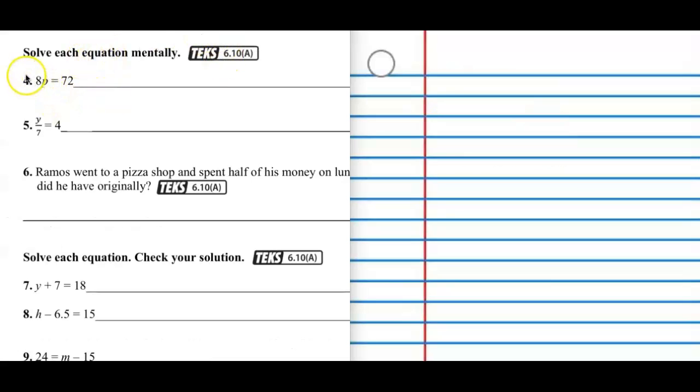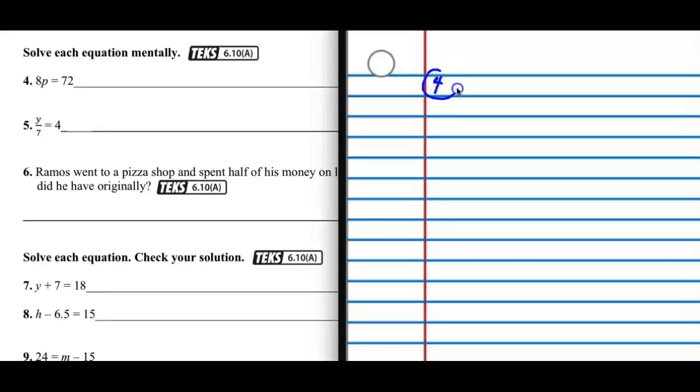Okay, for the next two problems, it's asking you to actually solve it mentally. So let's write down number 4. Whoops, hello. Let's turn the pen on first. So if I write down the number 4, 8p equals 72.